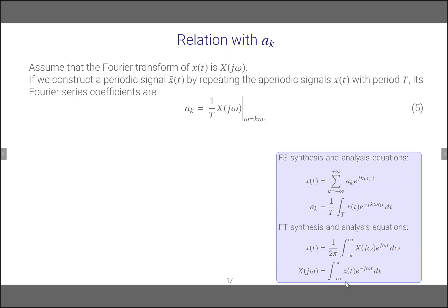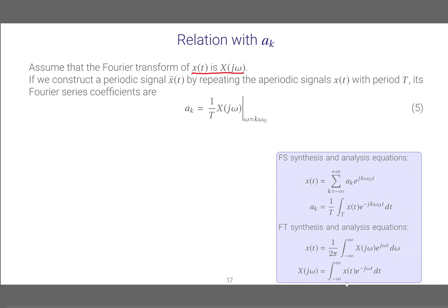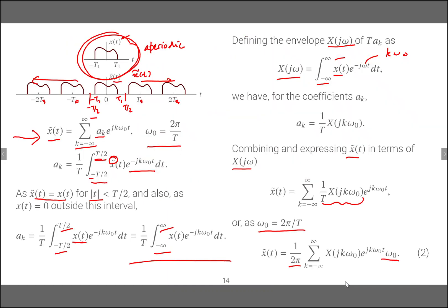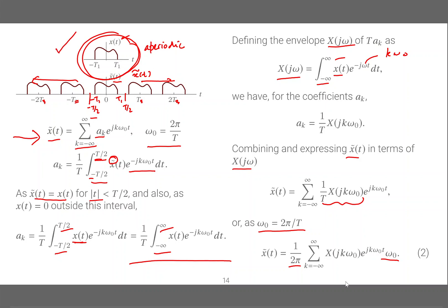To reestablish the relation between the Fourier transform and aₖ: assuming the Fourier transform of x(t) is X(jω), if we construct a periodic signal x̃(t) by repeating the aperiodic signal x(t) with period T, its Fourier series coefficients are aₖ = (1/T)·X(jω) evaluated at ω = k·ω₀. So from X(jω) we can obtain the aₖ coefficients of the periodically repeated version x̃(t).